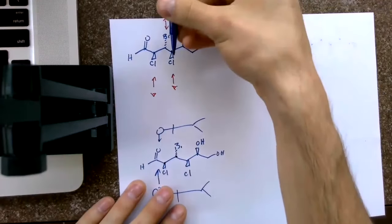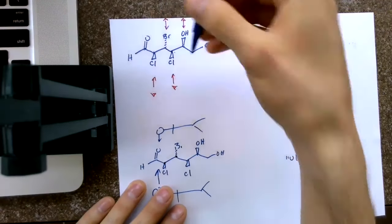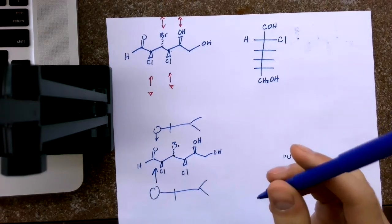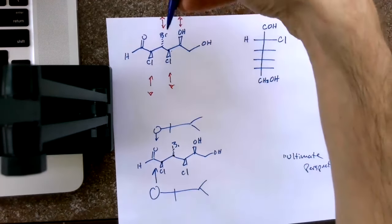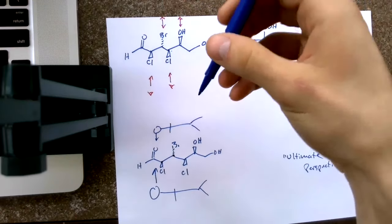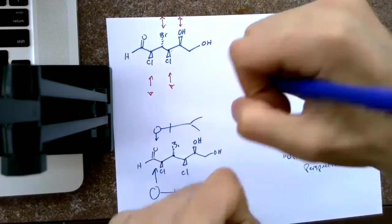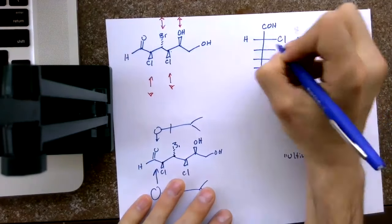But if I flip my perspective now, and I'm looking down, and I'm looking at this bromine, the bromine is going into the page. And since my perspective is looking at it this way, if it's going into the page, that's again to my right. So I spread it down to my right.